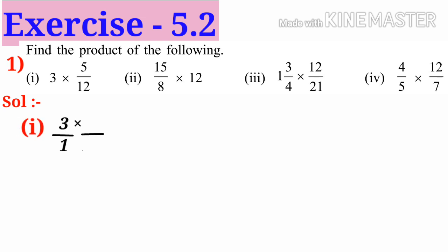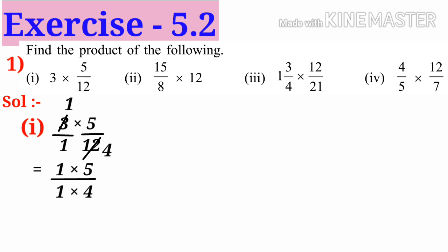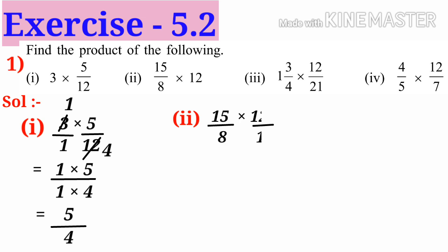First problem: 3 × 5/12 can be written as 3/1 × 5/12. By simplification, divide by 3: numerator 1 × 5, denominator 1 × 4, that is 5/4 is the answer. Number 2: 15/8 × 12 can be written as 15/8 × 12/1.